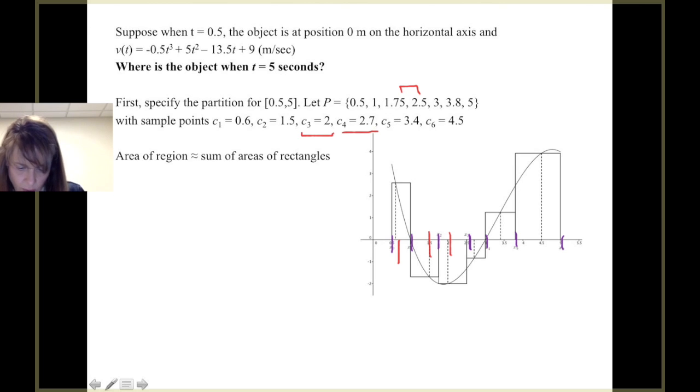Our fourth sample point falls in the fourth subinterval. So 2.7 is between 2.5 and 3. Our next sample point is 3.4, and our next one is 4.5.